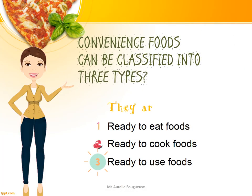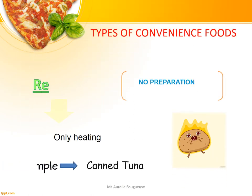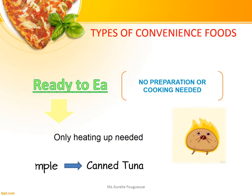You did a great job in listing some examples of Convenience Foods. But do you know that Convenience Foods can be classified into three types? They are: firstly, ready-to-eat foods; secondly, ready-to-cook foods; and finally, ready-to-use foods. Let's take a look at each type in more detail.